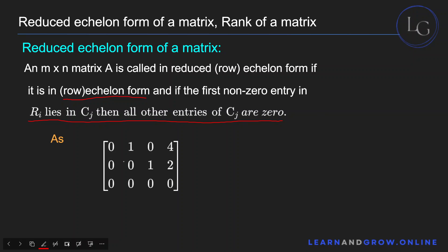Let's verify this with an example matrix. First, we confirm it is in row echelon form — there are three conditions: the number of leading zero entries must increase as the row number increases, which is the case here with one zero in row one, two zeros in row two, and four zeros in row three. Second, the leading entries of nonzero rows must be one, which is satisfied. Third, any all-zero row must be at the end, which is also satisfied.